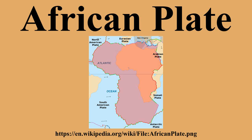The African Plate is bounded on the southeast by the Somali Plate, the north by the Eurasian Plate, the Aegean Sea Plate, and the Anatolian Plate, and on the south by the Antarctic Plate. All of these are divergent to spreading boundaries, with the exception of the northern boundary and a short segment near the Azores known as the Terceira Rift.